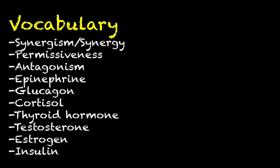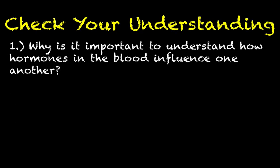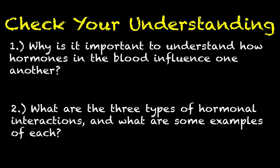That's going to do it for this quick video. Here is a list of vocabulary terms you probably ought to know. For checking your understanding: number one, why is it important to understand how hormones in the blood influence one another? And number two, what are the three types of hormonal interactions and what are some examples of each? If you have any questions, go ahead and drop them in the comments section. See you next time!